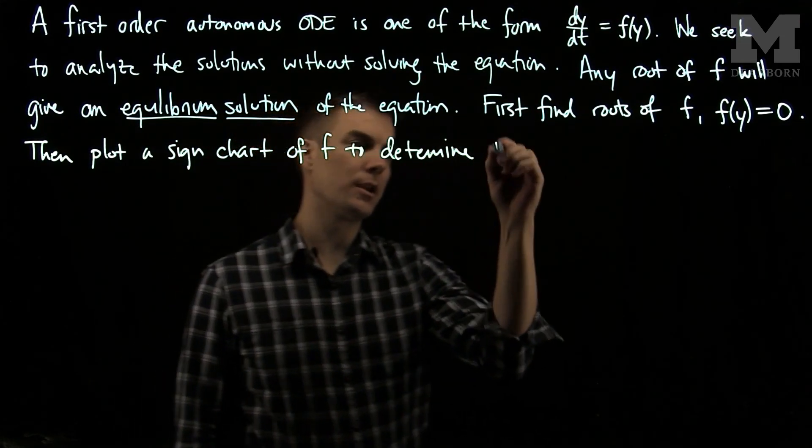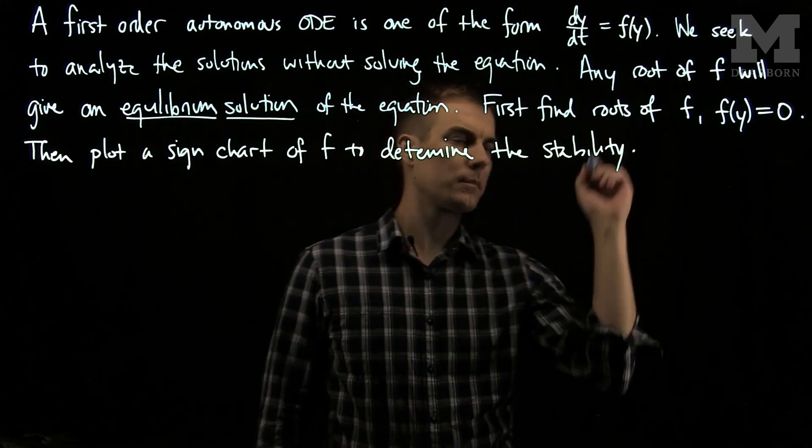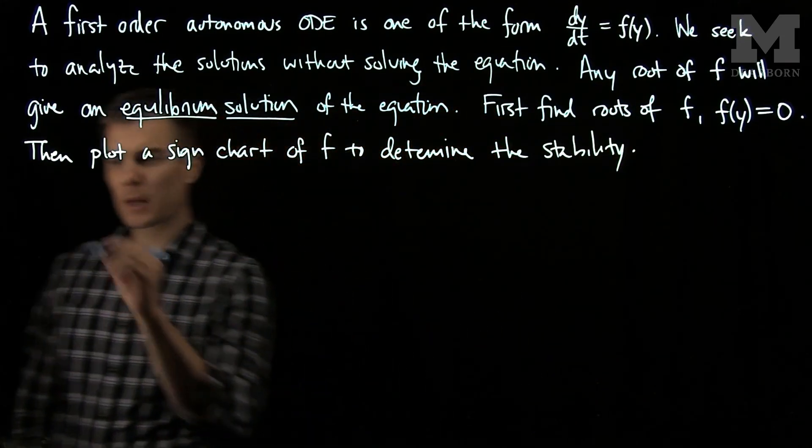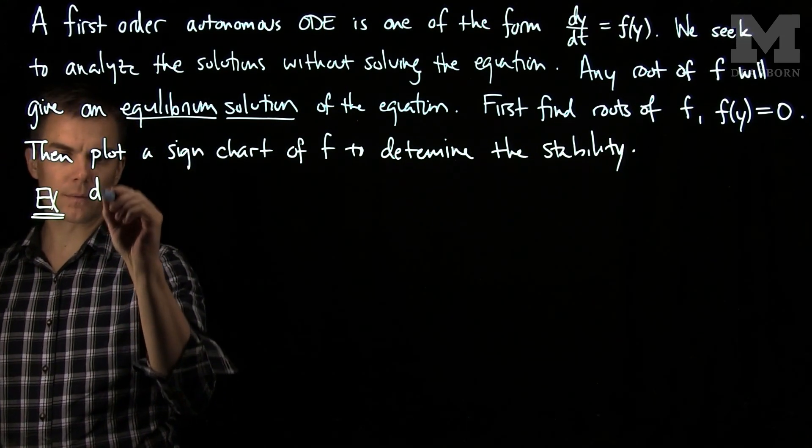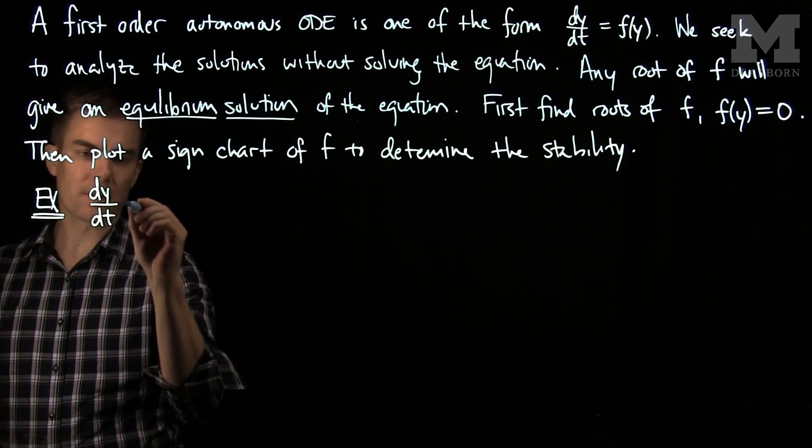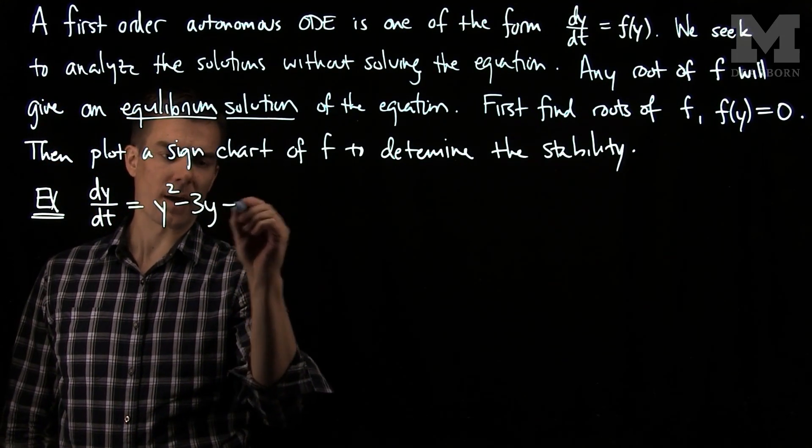To determine the stability, or long-time behavior. Let's see how this works through an example. Let's consider the following autonomous ordinary differential equation: dy/dt = y² - 3y + 2.